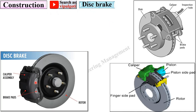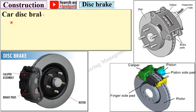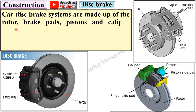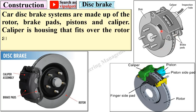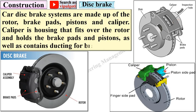Now the construction of the disc brake. In this figure you can see the caliper, braking pads, and the rotor — sometimes called the disc. The braking pads are used on both sides of the disc. The caliper is a housing that fits over the rotor and holds the braking pads and the piston, as well as containing ducting for braking fluid if it is hydraulically operated.